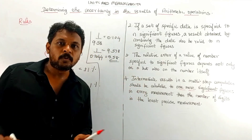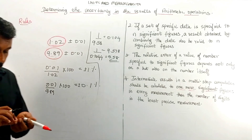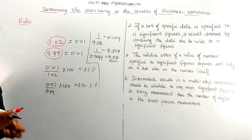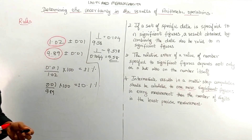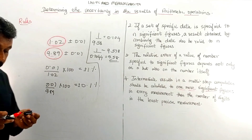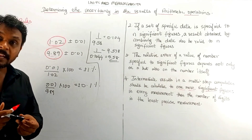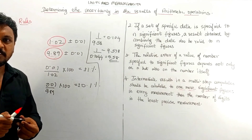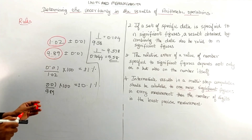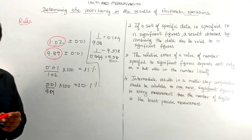So these are the rules for representing the uncertainty in the result of the arithmetic operations. Thank you.